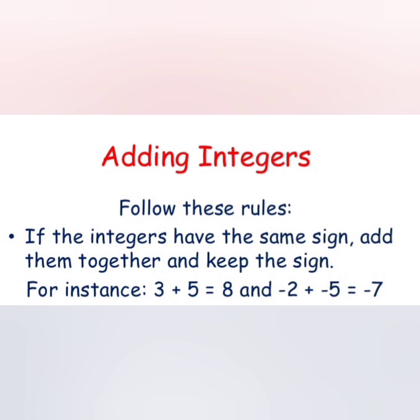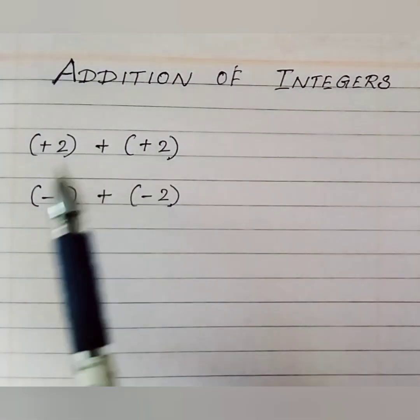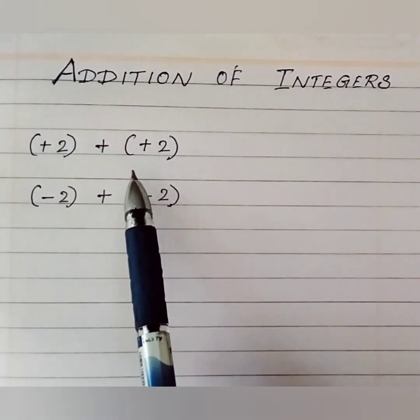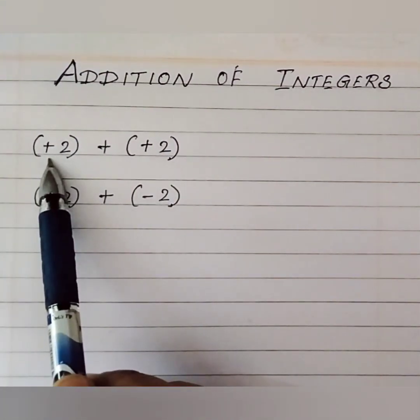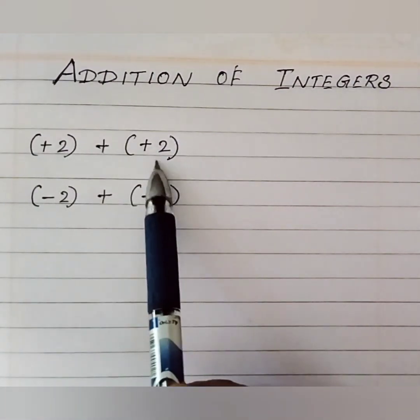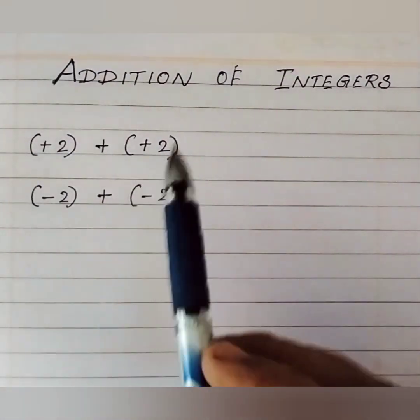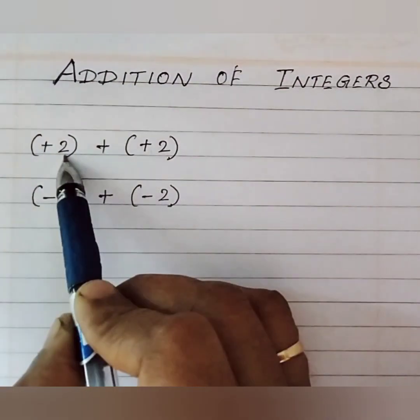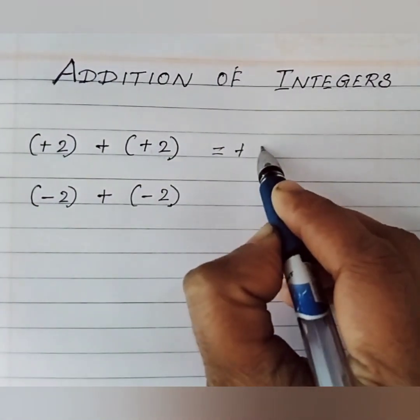Let's see the first example: (+2) + (+2). We're going to add plus 2 plus plus 2. Both numbers have the same sign, so we add them and keep the sign as is. What is 2 plus 2? It's 4. So plus 2 plus 2 equals 4. Write 4 and then write the same sign. Our answer is +4.